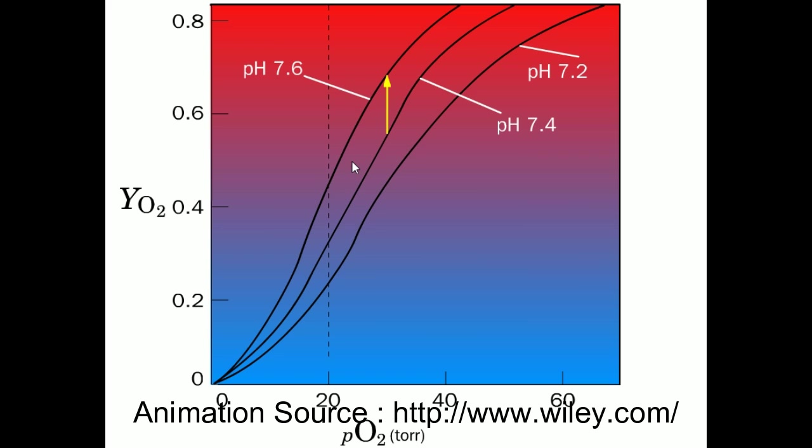If the pH suddenly increased to 7.6, the YO2 will increase to about 0.65. The arrow indicates that the increased binding of oxygen by hemoglobin due to the pH change. This means that more oxygen will be bound if the pH increases. If the pH drops from pH 7.4 to 7.2, YO2 will decrease and about 10 percent of the binding sites will release the oxygen. This acid-induced release of oxygen is known as the Bohr effect.